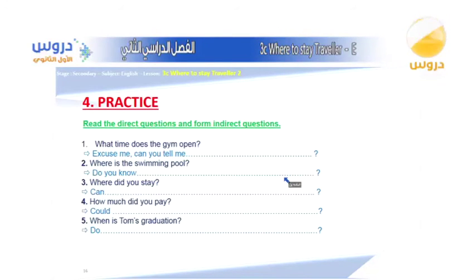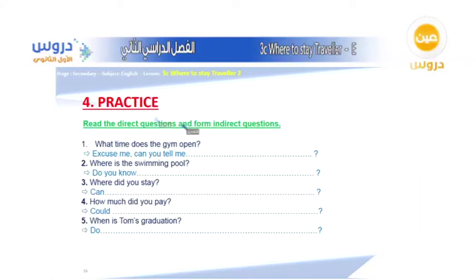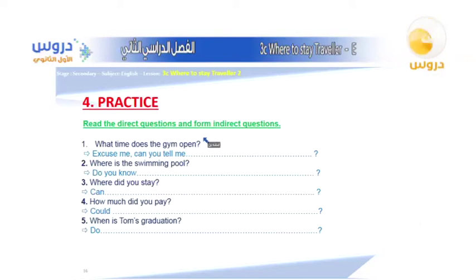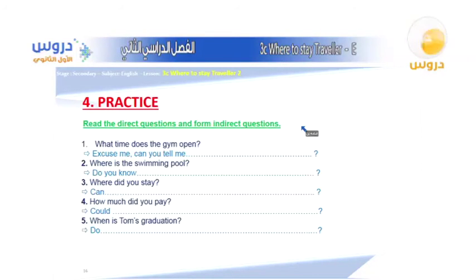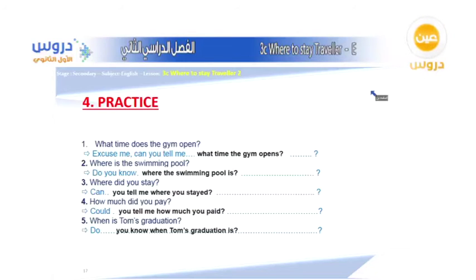For practice number four: read the direct question and form an indirect question. Example one — direct: 'What time does the gym open?' Indirect: 'Excuse me, can you tell me what time the gym opens?' Notice we add an expression at the beginning and change the word order.